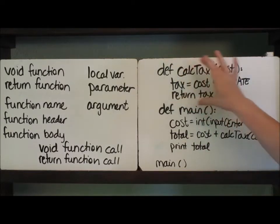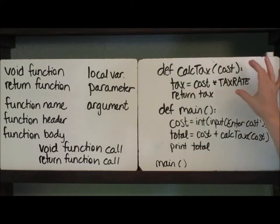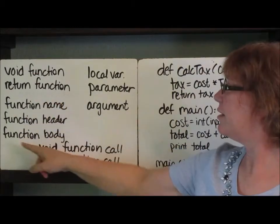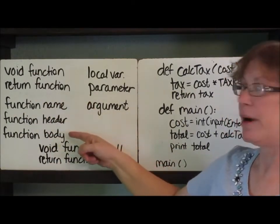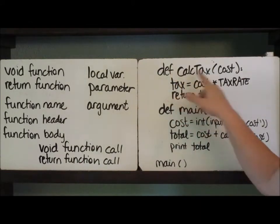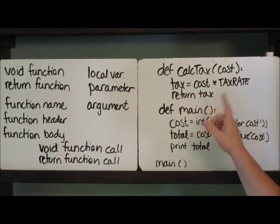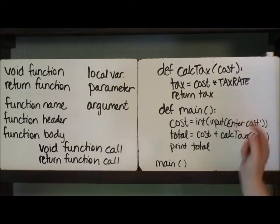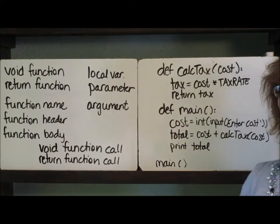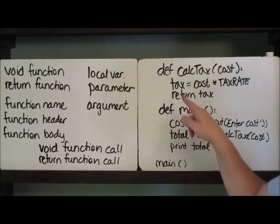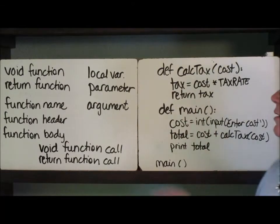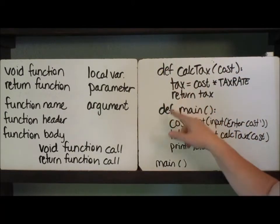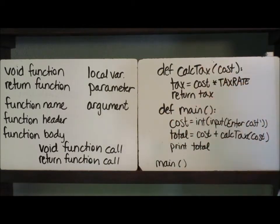So we can identify void functions and return functions. Now every function has these three things: a name, a header, and a body. It should be fairly straightforward. The name of this one is cap_text, and the name of this one is main. The header is the entire line — it always has the colon at the end, which indicates any kind of a statement header. And then the body is the part that's always indented four spaces. So we've got our function header and our function body, and we know what the names are.